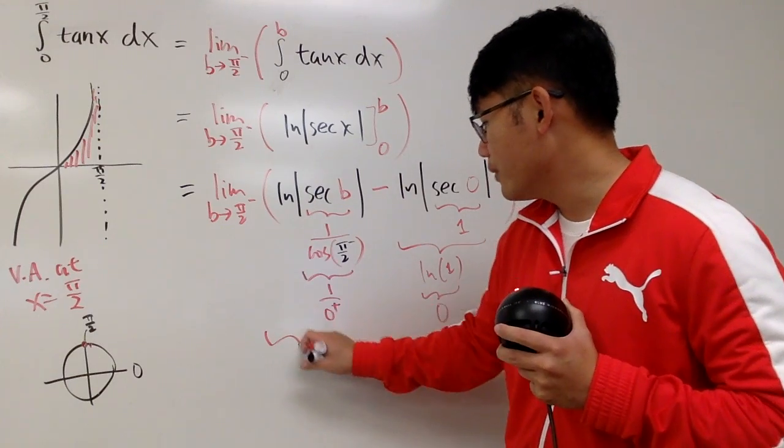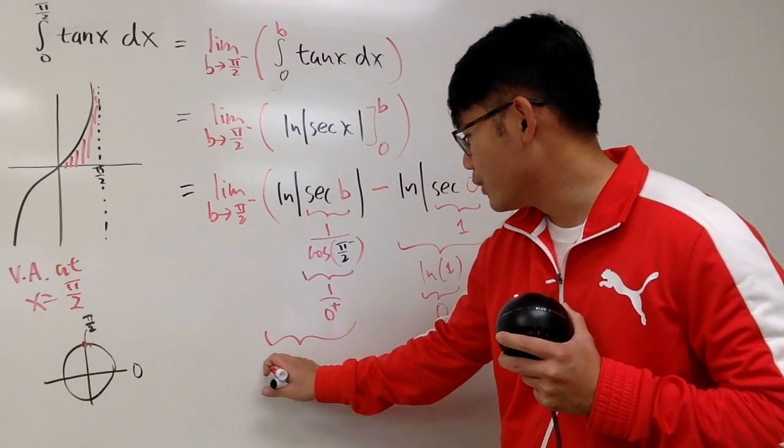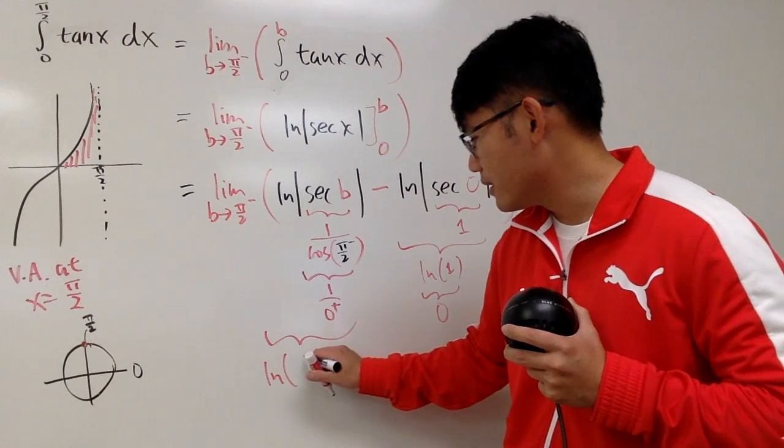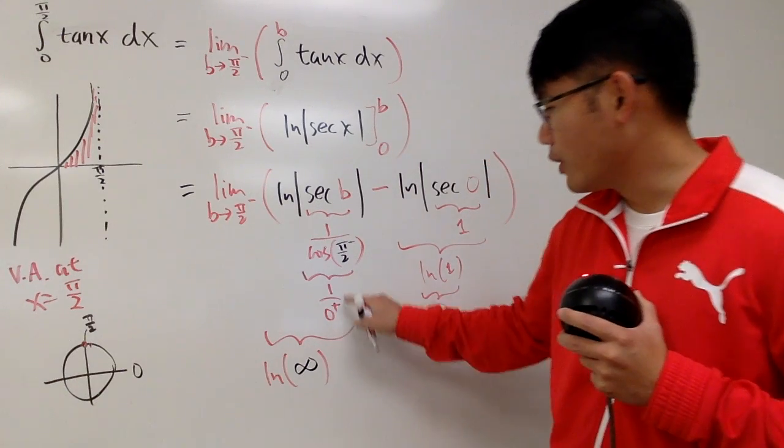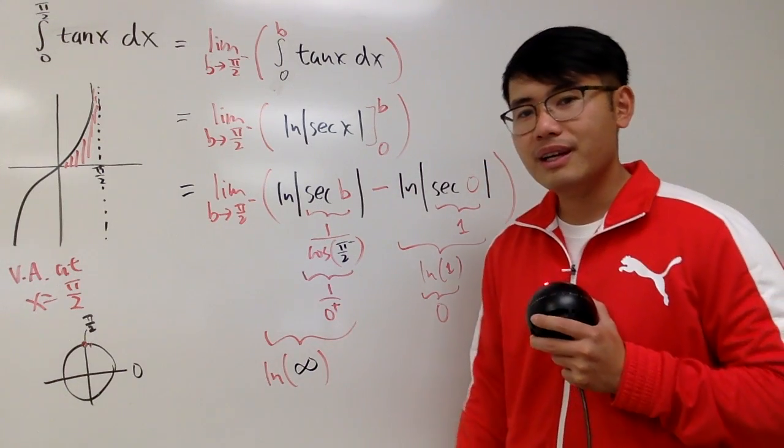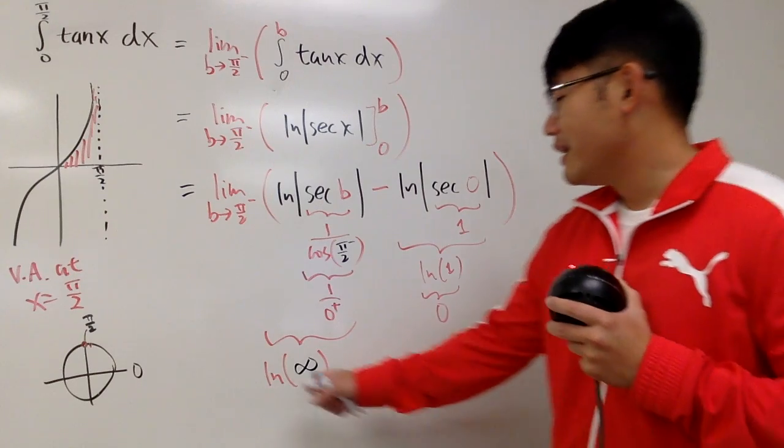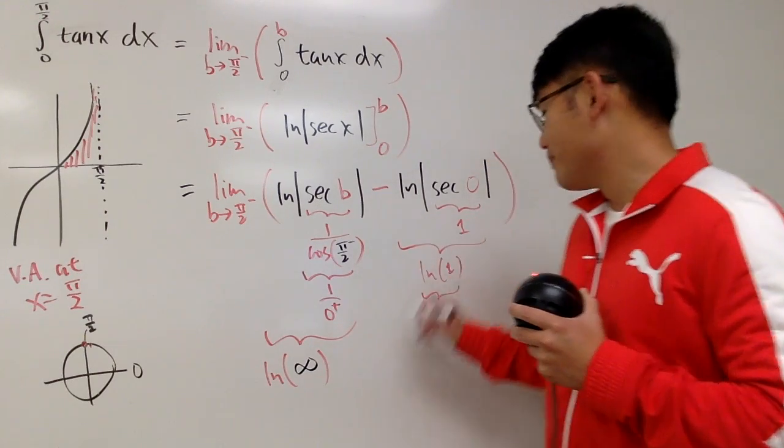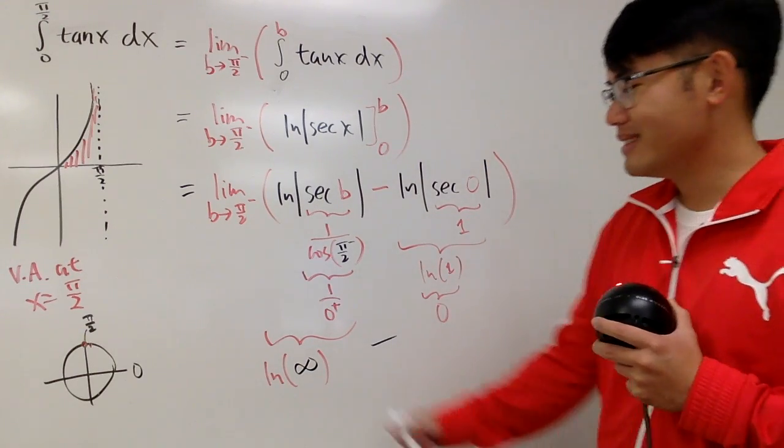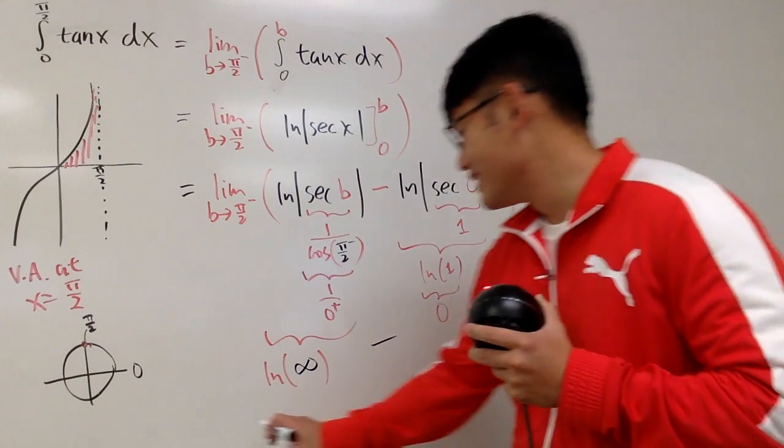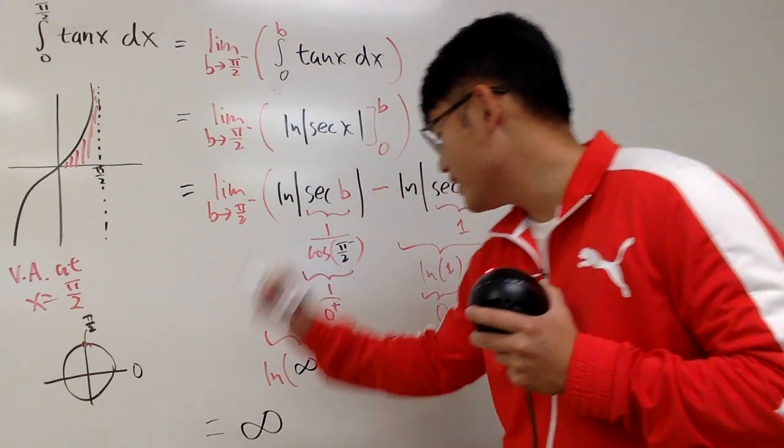So, all in all, you will see, you have to deal with natural log of positive infinity. Right? 1 over 0 plus is positive infinity. And now, the final question is, natural log of infinity minus this 0. This is infinity minus 0. So, you get infinity.